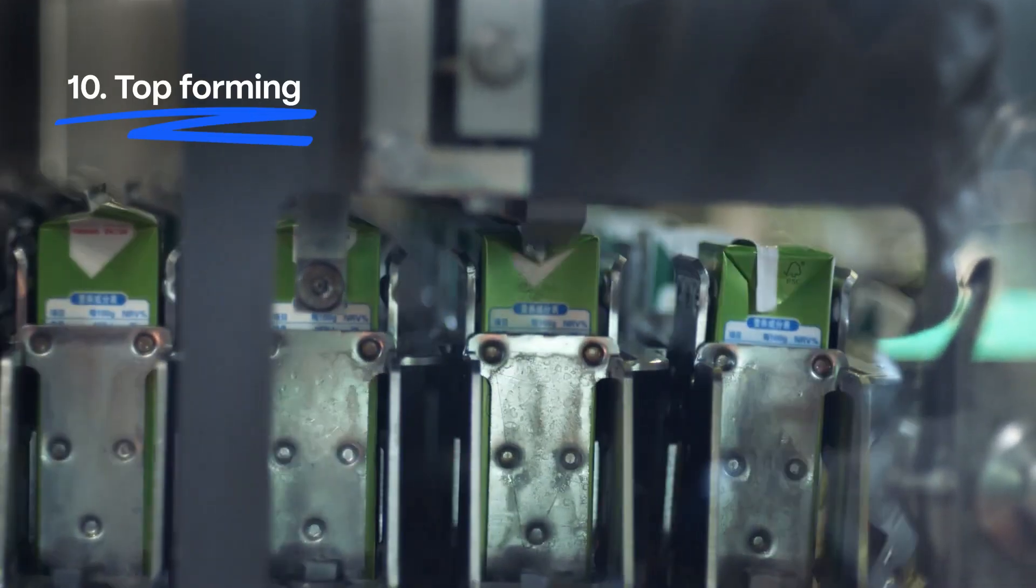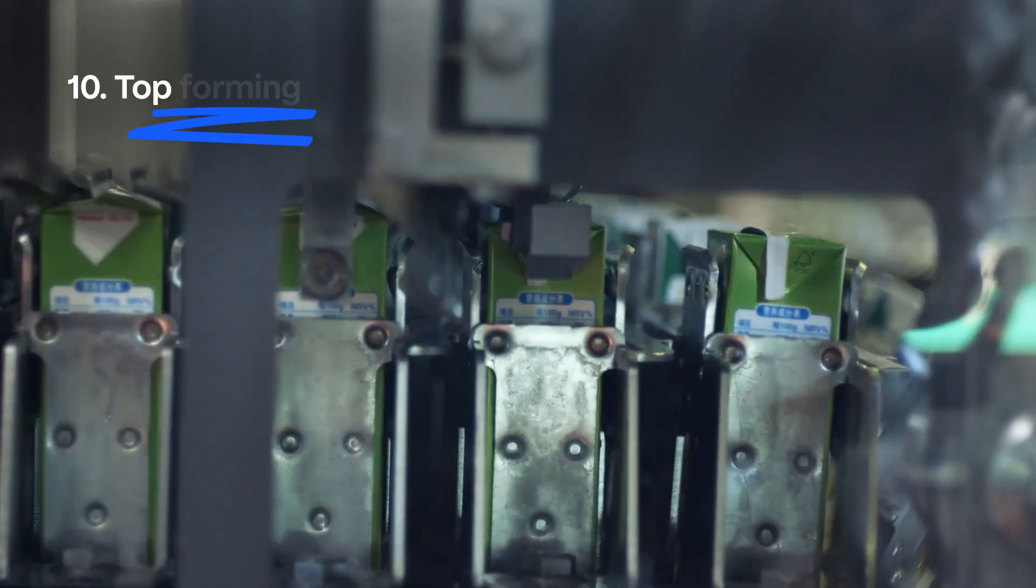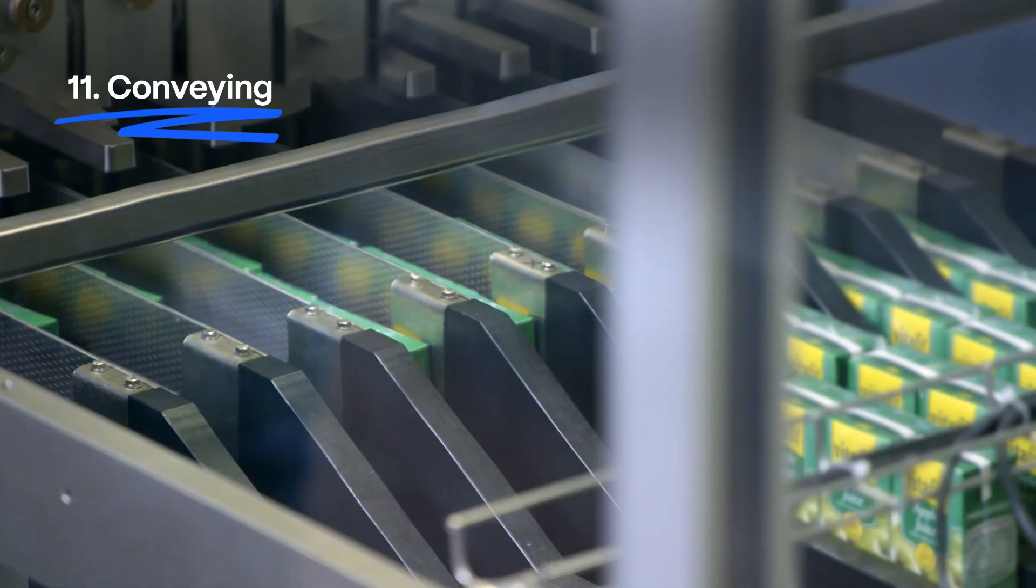At the top forming station, side flaps are heated and sealed to the packs, which exit the machine on conveyor belts and are transferred to downstream units.